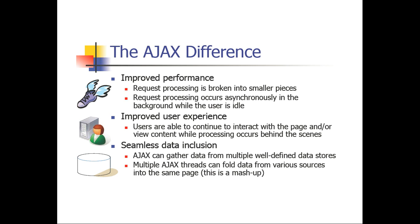Seamless data inclusion: Ajax can gather data from multiple well-defined data stores. Multiple Ajax threads can fold data from various sources into the same page, and this is where you start talking about collaboration. Most of us have a multiple database environment — whether it's a CRM integrated with a telephony system, or a nurse call system integrated with an E911 notification system, or some type of patient database. We have multiple databases and we want to access that data in real time to improve our customer experience. That's the Ajax difference.